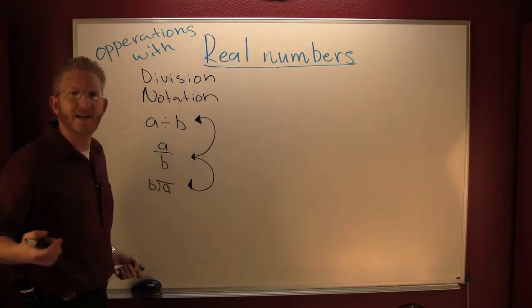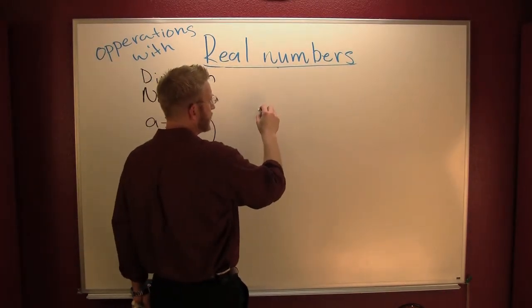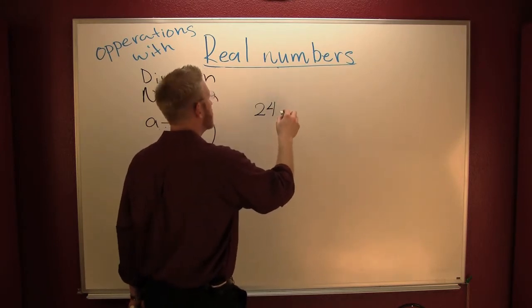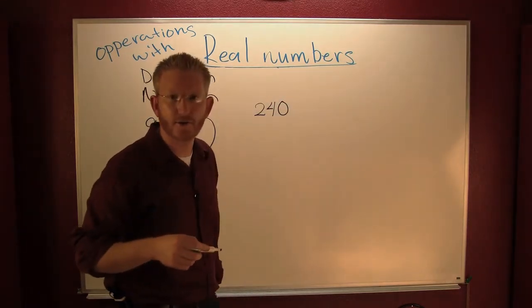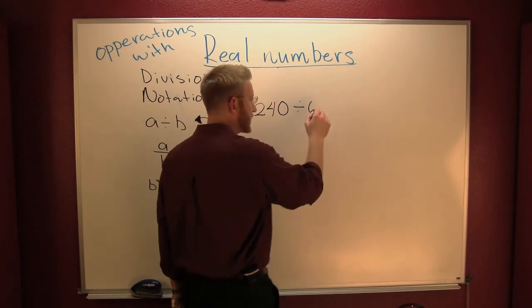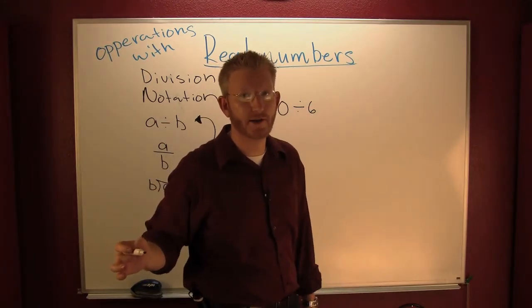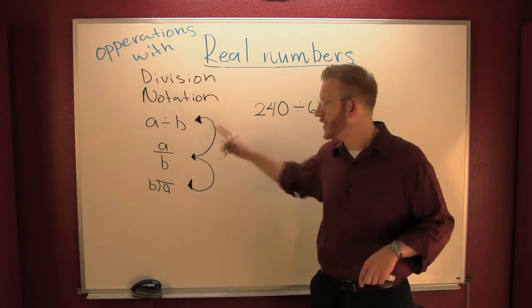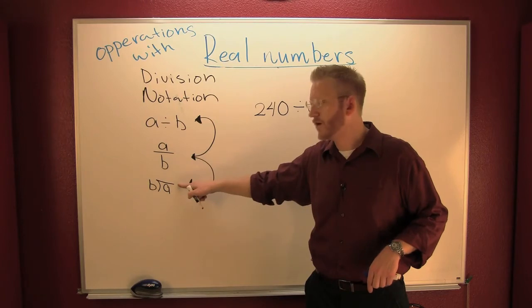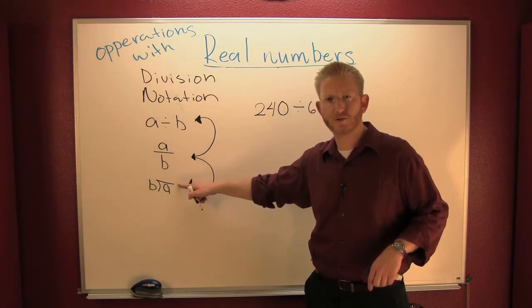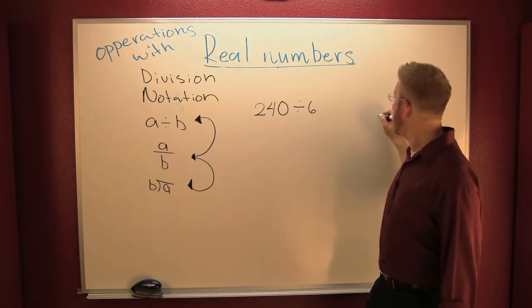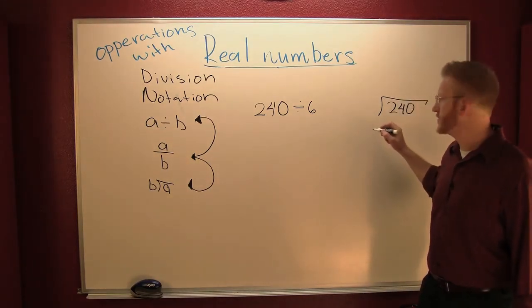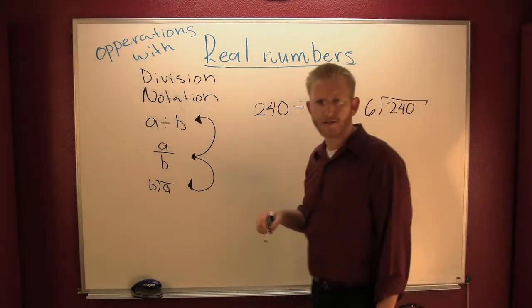Let's do two hundred and forty divided by six. I want to go through a couple of different methods of dividing this number. First, why don't we rewrite that in a different form — we can either go vertically or old school. Let's first go old school; it's one that you're familiar with. Two forty in the house, six out of the house. Let's go through this division algorithm.